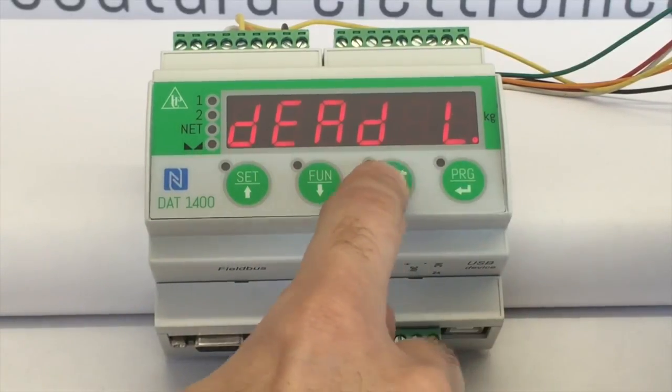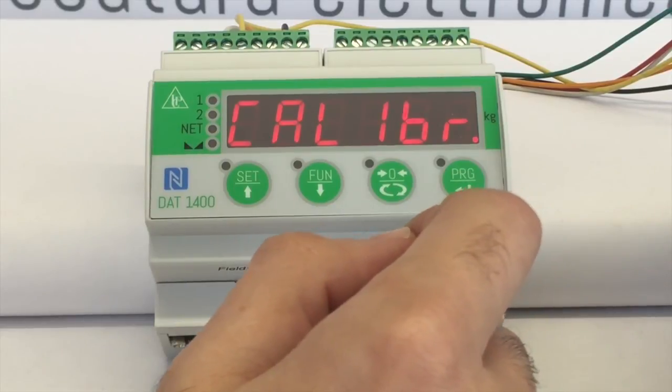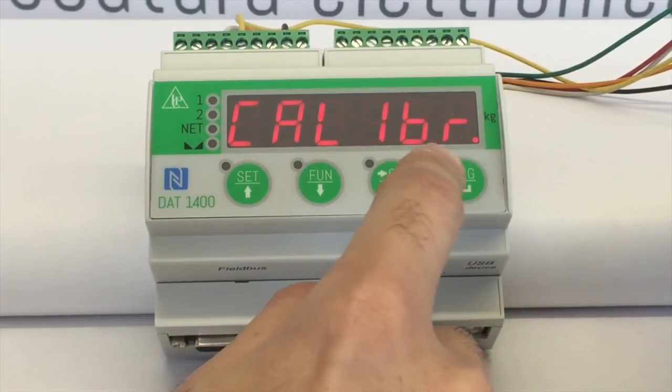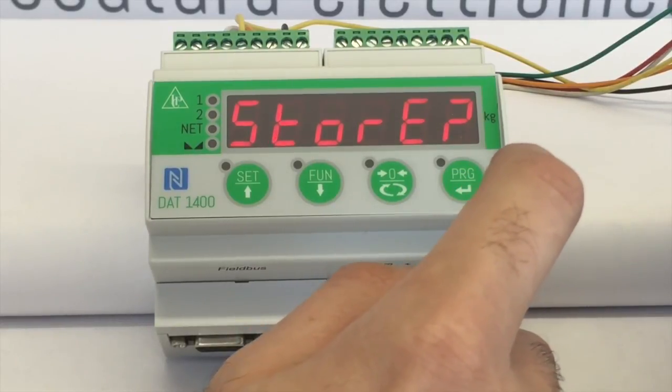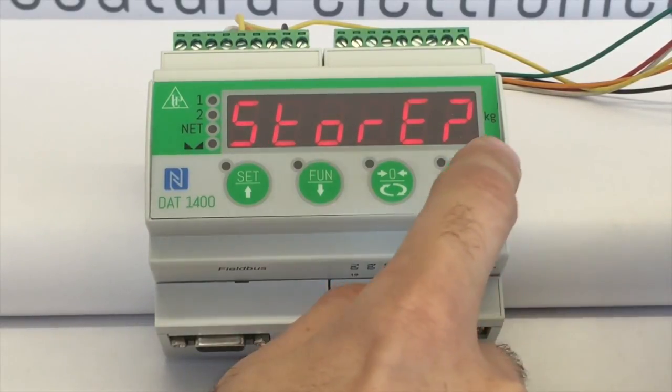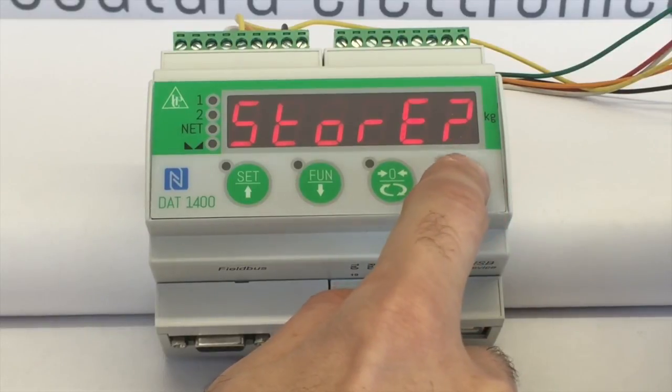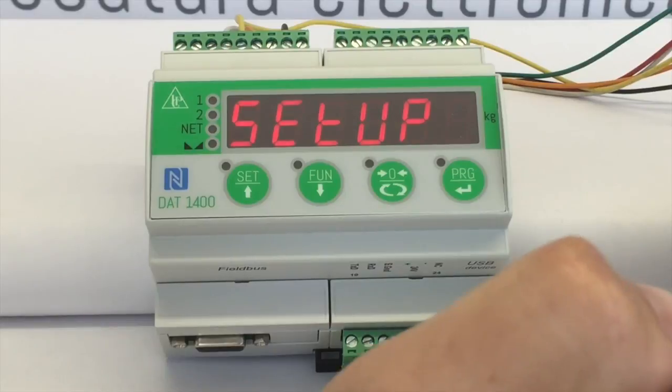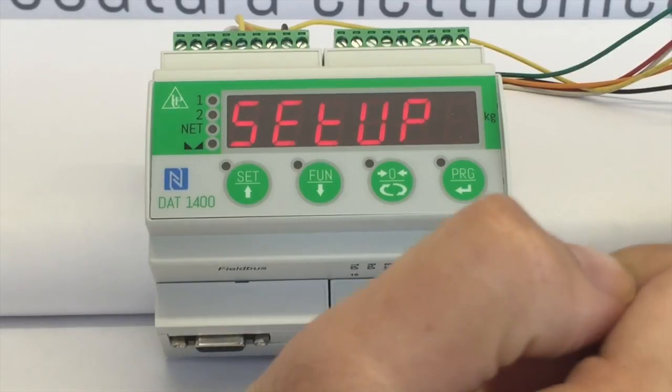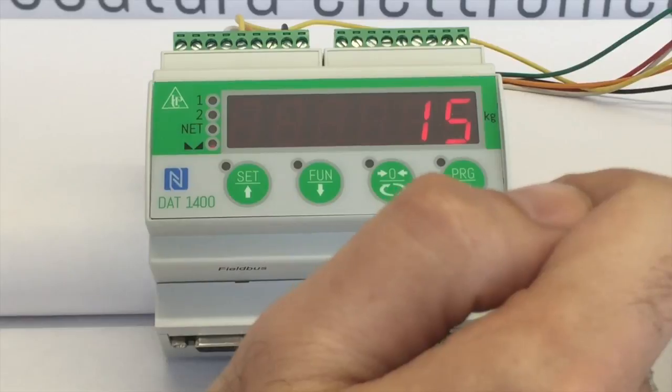Now you can exit the menu by pressing in sequence, 0 and calibre will appear on the display. Press 0 again to show STORE with a question mark. To apply changes, press PRG for 2 seconds. The display will show SETUP. Press once the 0 button to exit the menu and return to weighing.